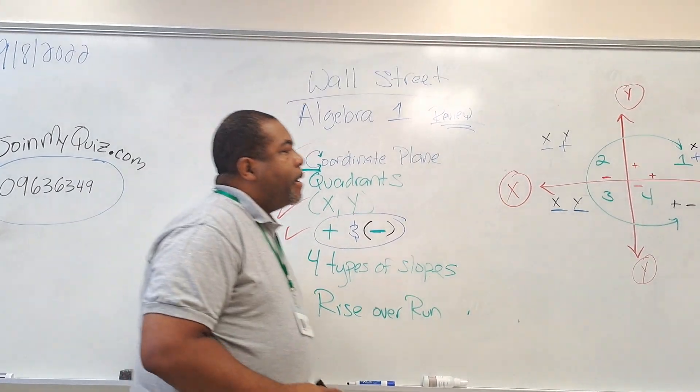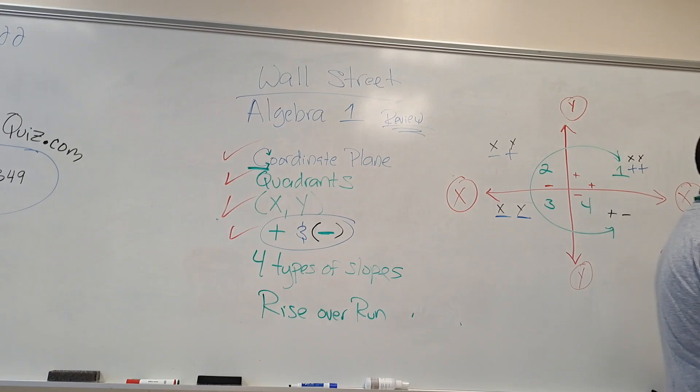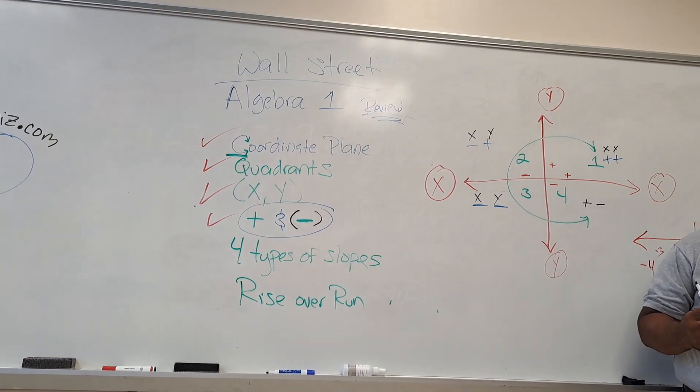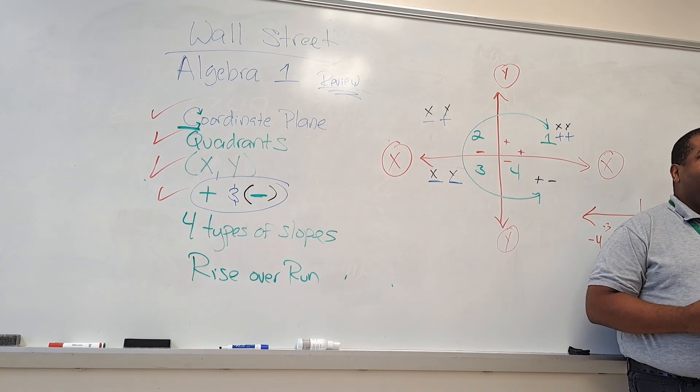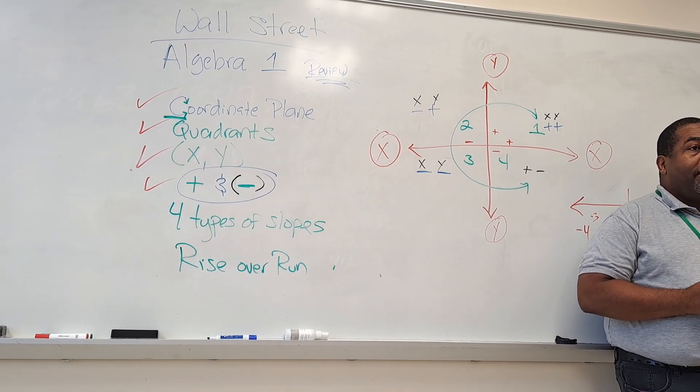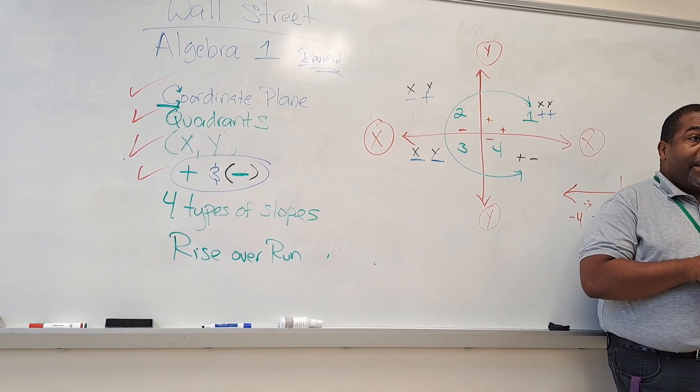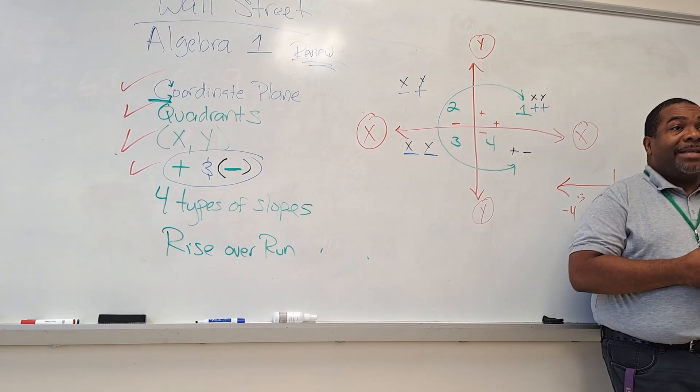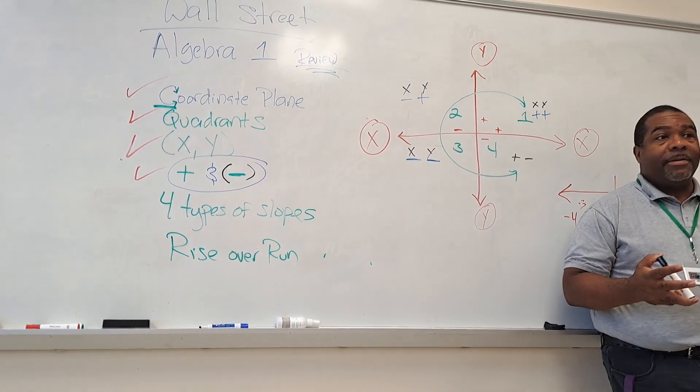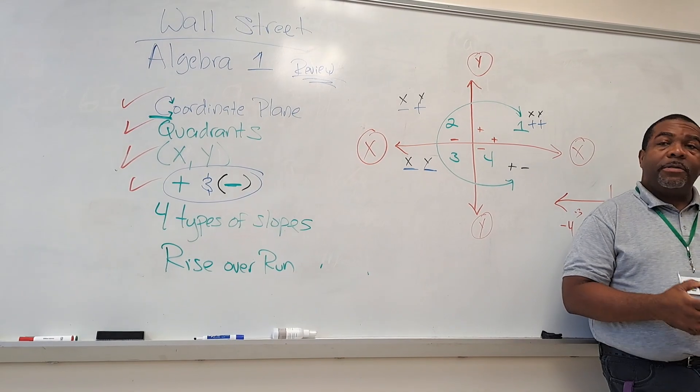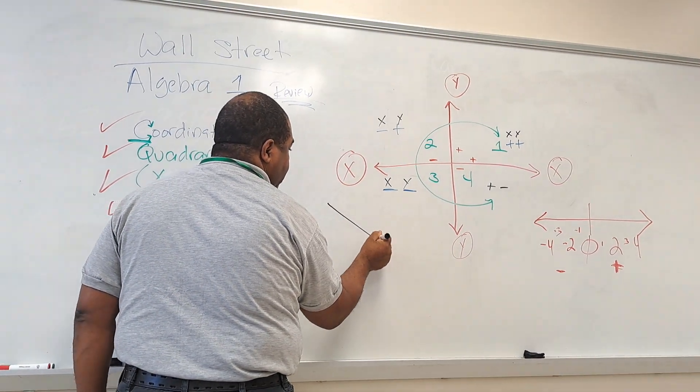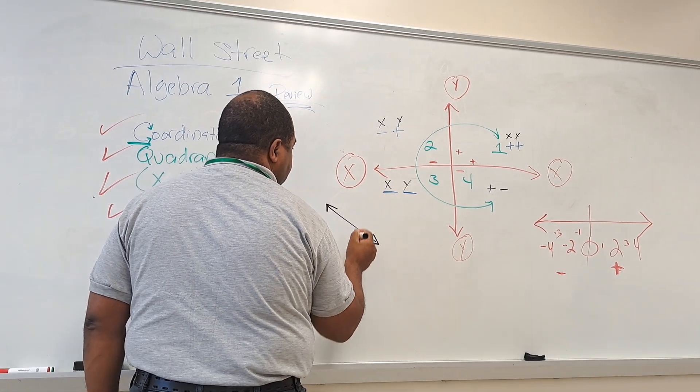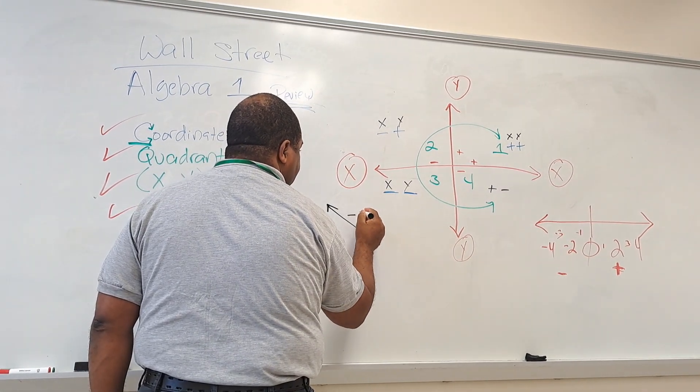Four types of slopes. All right. I start off with a lot of money. I lose a lot of money. Is that positive or negative? Well, it's positive. Yeah, it's negative. At the end, it's negative. So that's a negative situation, right? So a negative slope starts high and goes low. This is a negative slope.